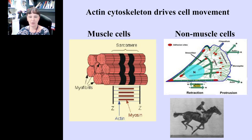The actin cytoskeleton is the major driver of cell movement and forms major different structures in muscle and non-muscle cells. In muscle cells, the actin cytoskeleton forms the stereotypic arrangement in myofibrils, where it interacts with myosin filaments to mediate muscle contraction — the macroscale mechanism that makes our bodies move. In non-muscle cells, the actin cytoskeleton also drives movement, forming several different structures that mediate cell retraction and protrusion.